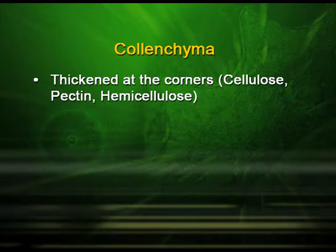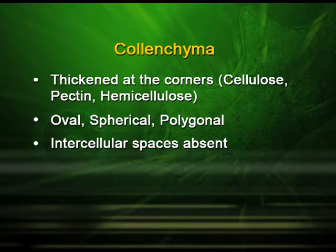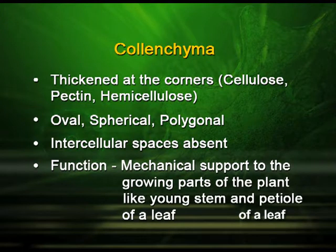The next simple tissue is colenchyma. It is thickened at the corners due to the deposition of cellulose, pectin, and hemicellulose. It is oval, spherical, or polygonal in shape. Intercellular spaces are not found because of the thickening at the corners. Its function is to provide mechanical support to the growing parts of plants like young stems and the petiole of a leaf.